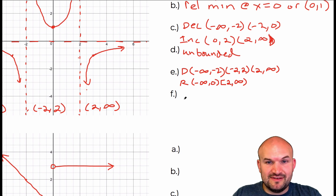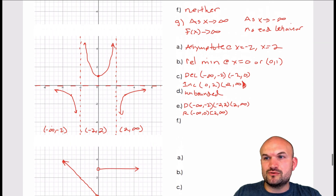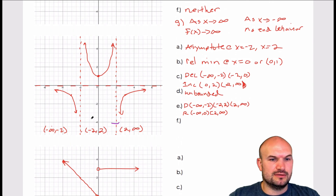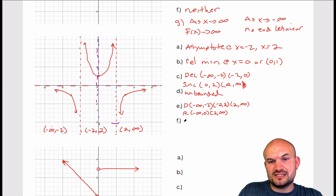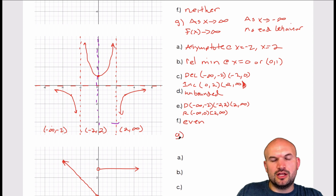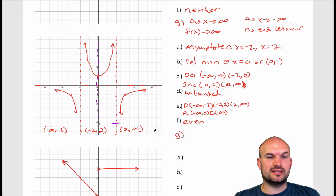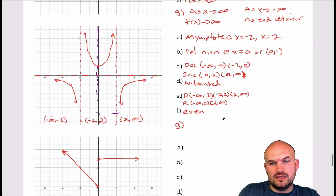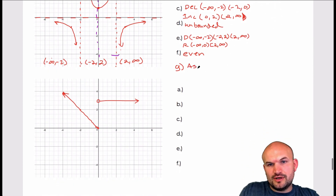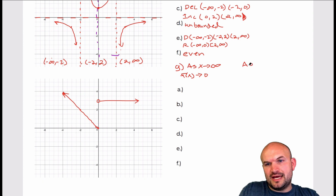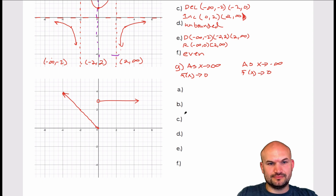F — even, odd, or neither. You can see that this graph is actually symmetrical about the y-axis. If you flip this graph about the y-axis, you get the exact same graph back, so this is an even function. For the end behavior: as the graph expands left and right, it approaches the horizontal asymptote y equals 0. So as x approaches infinity, f(x) approaches 0, and as x approaches negative infinity, f(x) approaches 0.